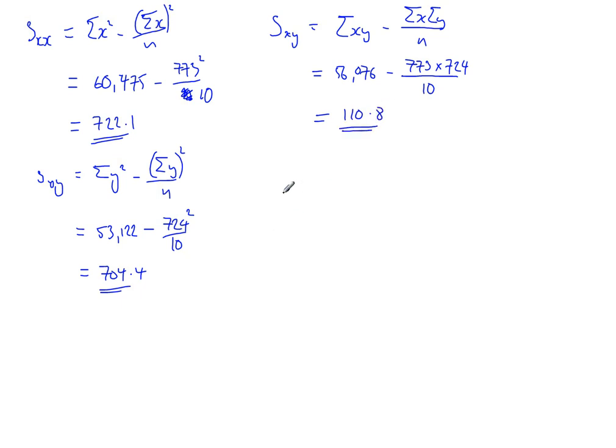So really, just formally sticking the data in, the last one is the one for R. So we need SXY divided by the square root of SXX times SYY. Excuse me. And if we do that, SXY 110.8 divided by the square root of 722.1 times 704.4.